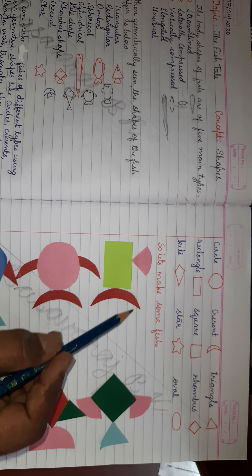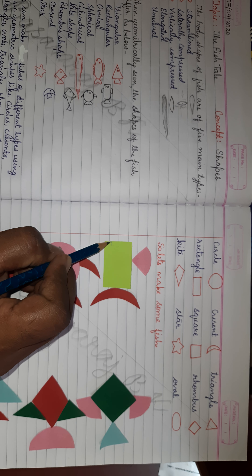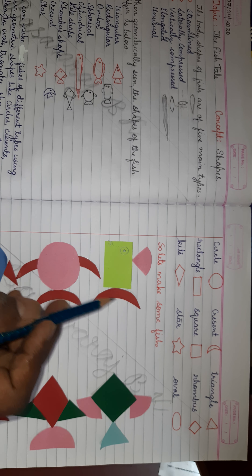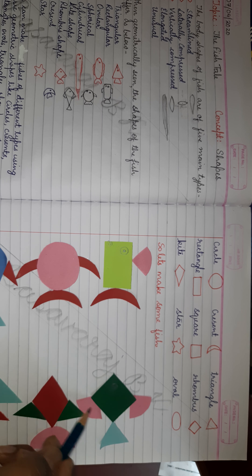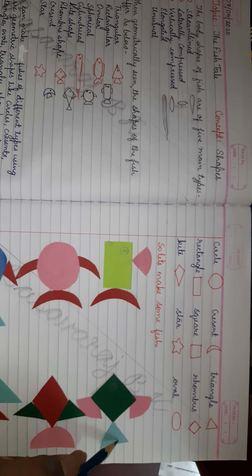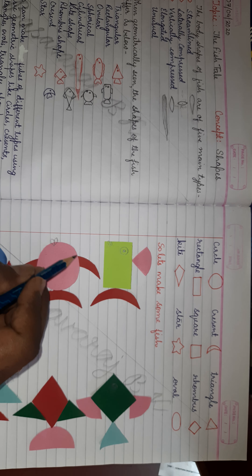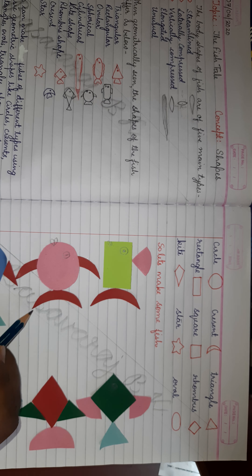So let us make some fish using different shapes. Here I have used a rectangular piece, a quarter circle and a crescent to make a fish. You can make the mouth of the fish here and the eye here. Here again you can see I have used a rhombus, two quarter circles and a triangle to make this fish.